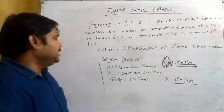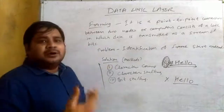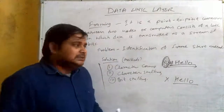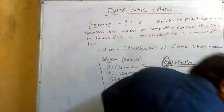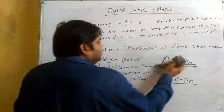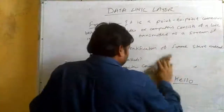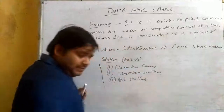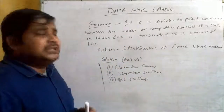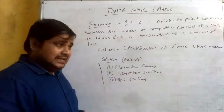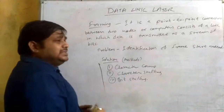This concept is the character count mechanism of framing. When we talk about another method, which is character stuffing — what happens here? From one frame to the other frame, how do you differentiate them?